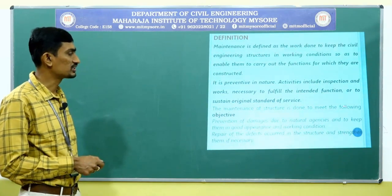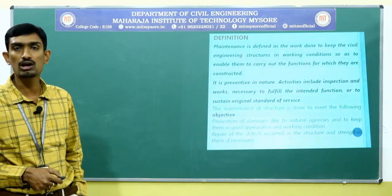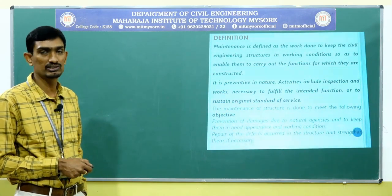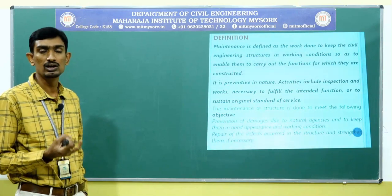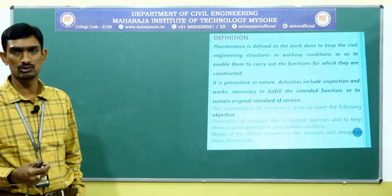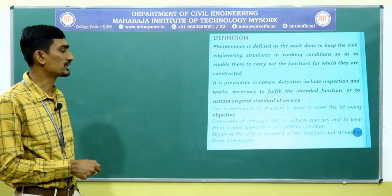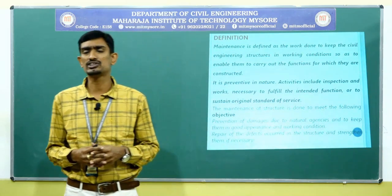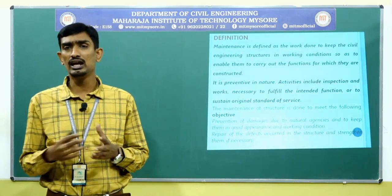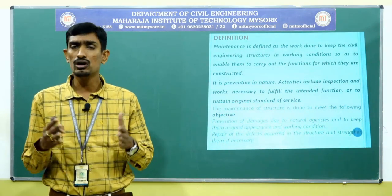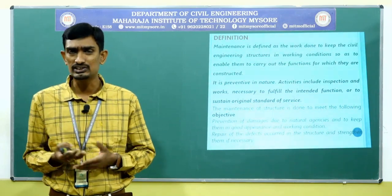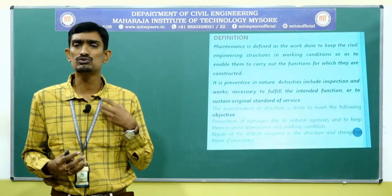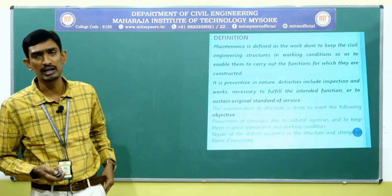The objectives of maintenance are: first, prevention of damage due to natural agencies such as rain and water — keeping structures in good appearance and working condition. All concrete and building structures will be subjected to various natural agencies like rain, water, and sun, and whatever the building has been designed or constructed should resist all those natural agencies.